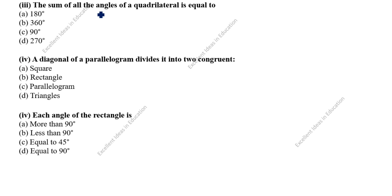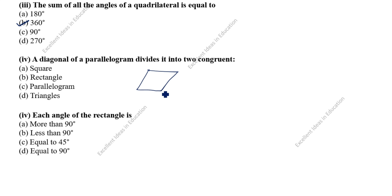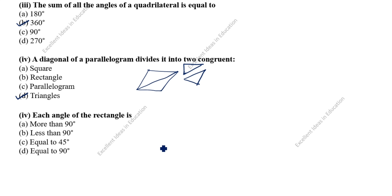Next question: the sum of all the angles of a quadrilateral is equal to 360 degrees, and for a triangle it is 180 degrees. The diagonal of a parallelogram divides it into two congruent triangles. You can draw the diagonal of this parallelogram and you see one triangle here and another triangle there — so two triangles. That is the answer.